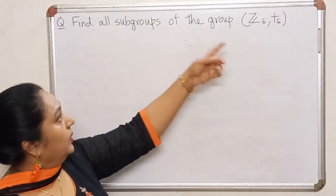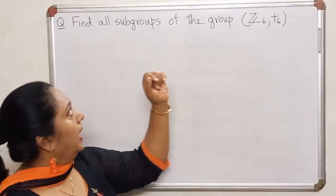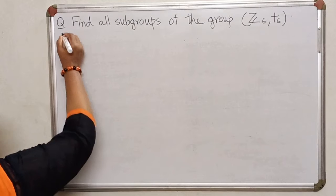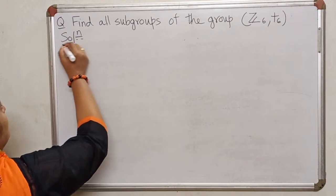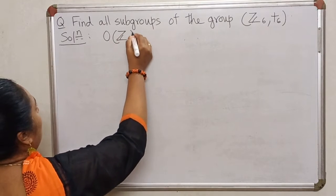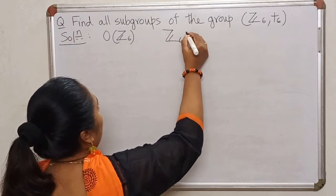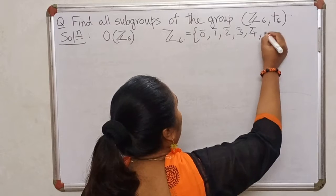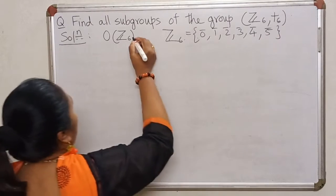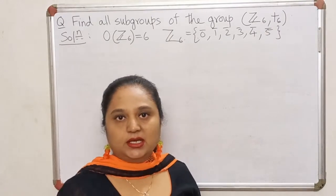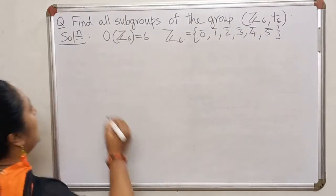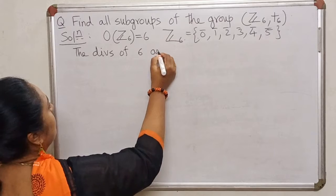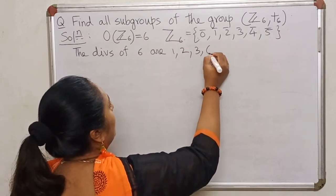In this problem, we are dealing with a finite group Z6 and we wish to find all subgroups of this. Since Z6 is a finite group, Z6 contains 6 elements in all. We know that the 6 elements are 0 bar, 1 bar, 2 bar, 3 bar, 4 bar and 5 bar. Therefore, order of this group is equal to 6. The divisors of 6 are 1, 2, 3 and 6.